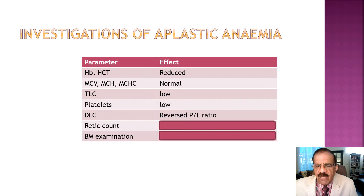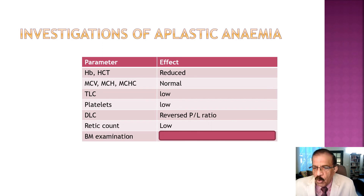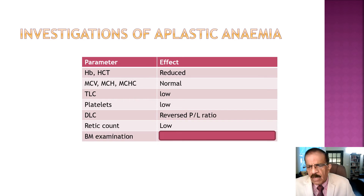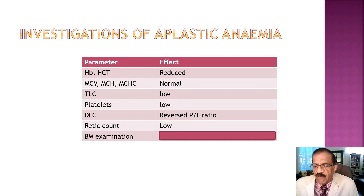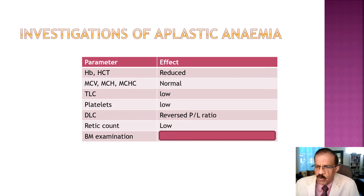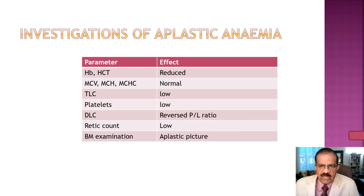In the differential count, there is a reversed poly-lymphocyte ratio - lymphocytes appear more in percentage terms. The reticulocyte count is low because it reflects bone marrow activity, which is very low in aplastic anemia. A high reticulocyte count would suggest an alternate diagnosis such as infiltration. In typical autoimmune aplastic anemia the reticulocyte count is reduced. Bone marrow examination is diagnostic, showing the aplastic picture with marrow replaced by fatty tissue.